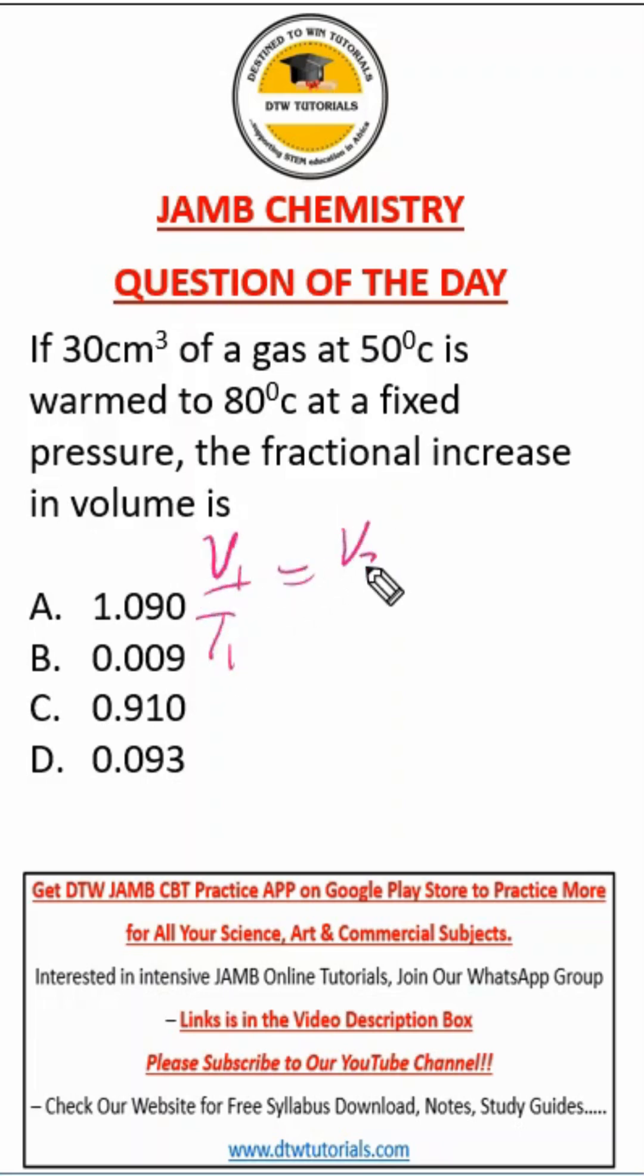We're looking for V2, so V2 equals V1 times T2 over T1. V1 is 30 cm³. T2 is 80°C; converting to Kelvin by adding 273 gives us 353K.